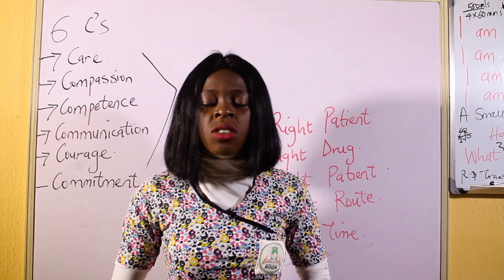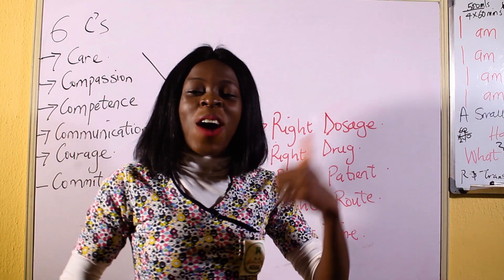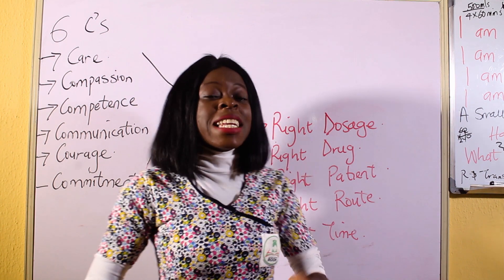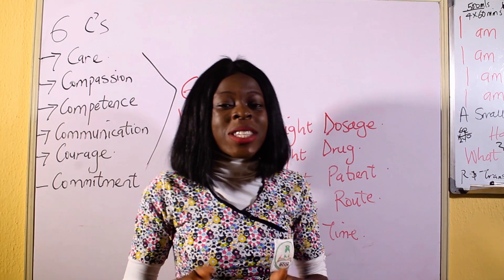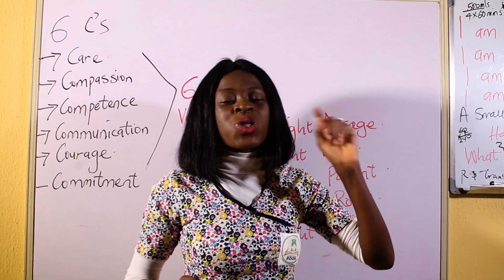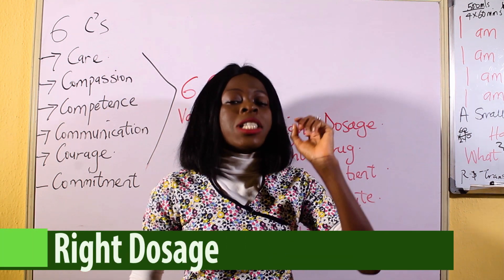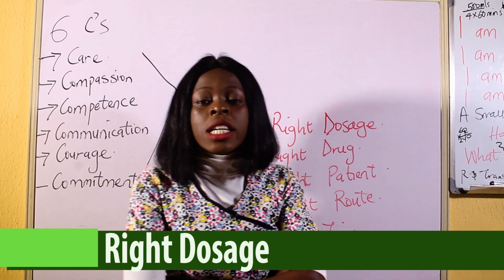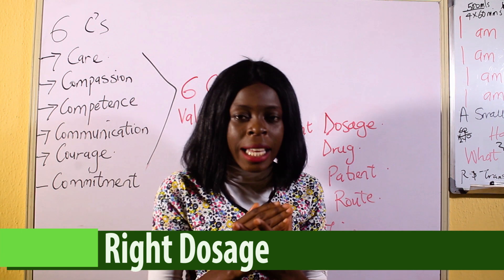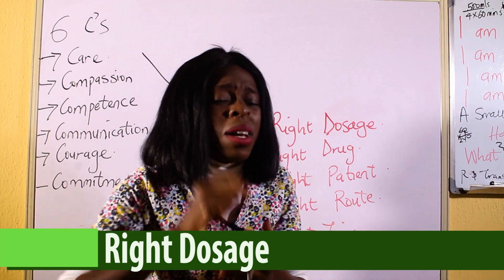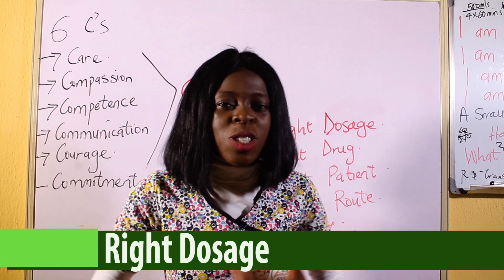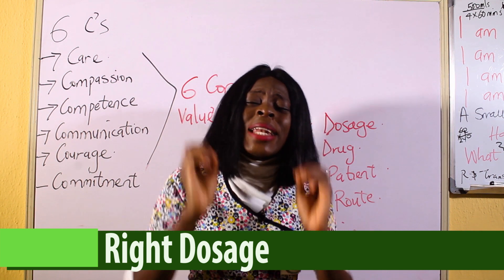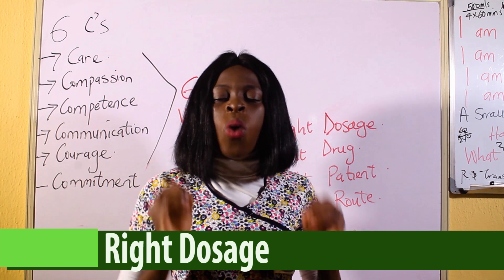That takes us to the five rights of drug administration. As we discussed in our previous video, when there's an error in calculation of drugs, there's going to be an error in administration. So as a nurse, it is your duty to give the right dose to your patient. Sometimes there's an error with dosage administration because of the handwriting. If you cannot clearly read what is prescribed in the doctor's handwriting, please ask questions. When you ask questions, you will not make errors.